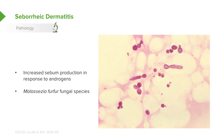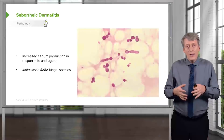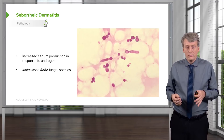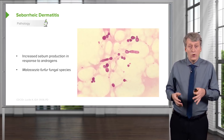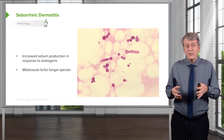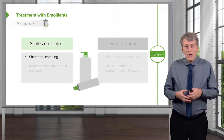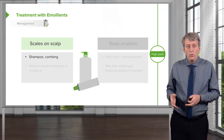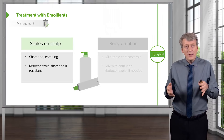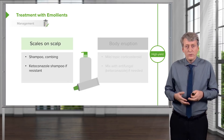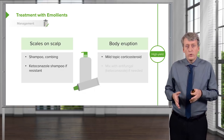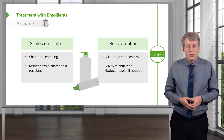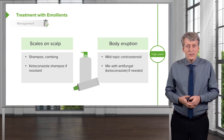A fungus called Malassezia furfur will grow in that area. In infants, we can often treat this with simply mineral oil or a little bit of combing. In severe cases or in adolescence, we can use a dandruff shampoo. We generally treat with emollients. For scales on the scalp, we'll give shampoo and combing and maybe ketoconazole shampoo if resistant. For body-wide eruptions, we'll treat with mild topical corticosteroids mixed with an antifungal such as ketoconazole to kill Malassezia furfur.